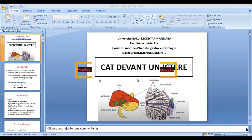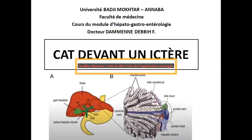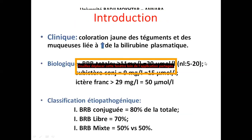On va commencer. Conduite à nous tenir devant un ictère. En introduction, l'ictère, c'est une coloration jaune des téguments et des muqueuses en rapport avec une augmentation du taux de bilirubine dans le sang.